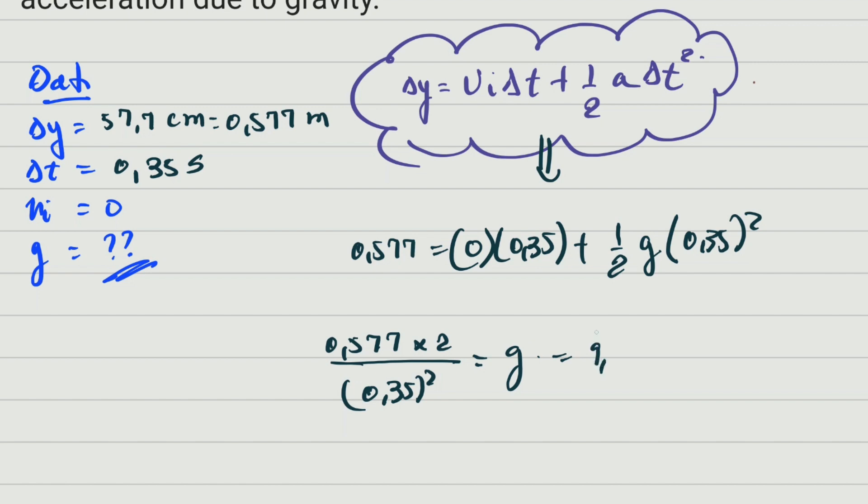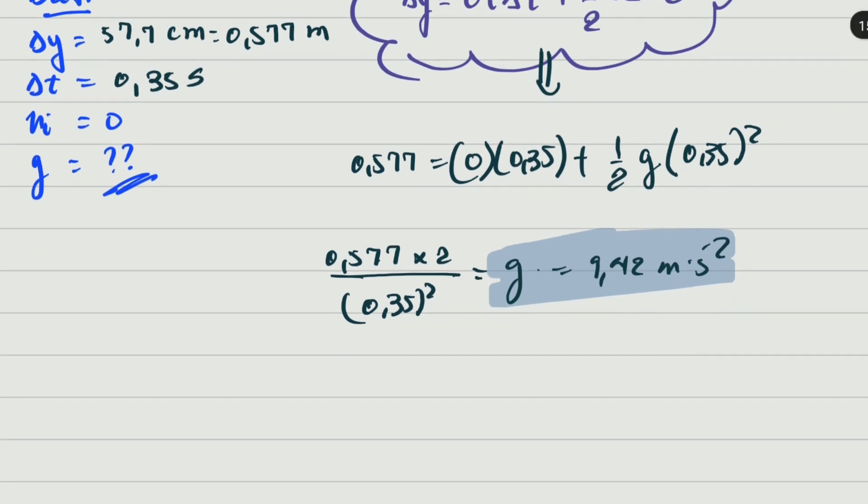That is the acceleration due to gravity we got. Remember, the experiment has certain errors - measurement with the ruler, friction, and other issues that affect the result. I've done this experiment previously and got 9.7, and other times I get similar numbers.